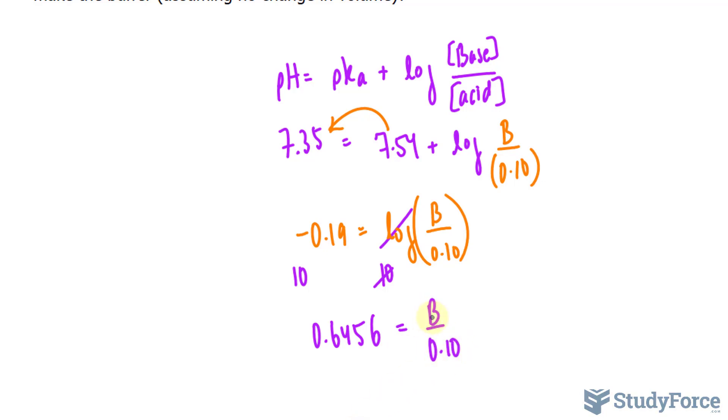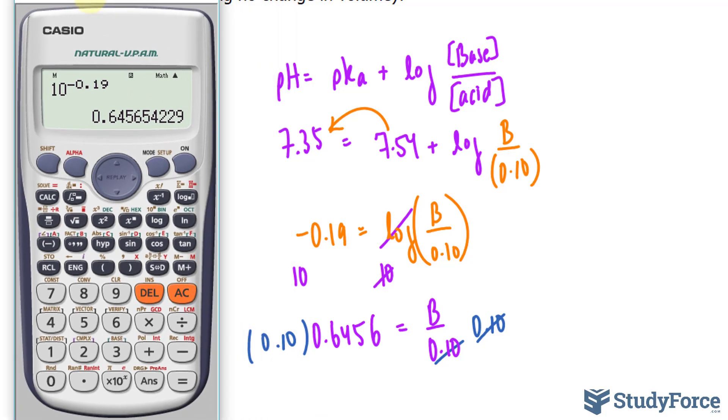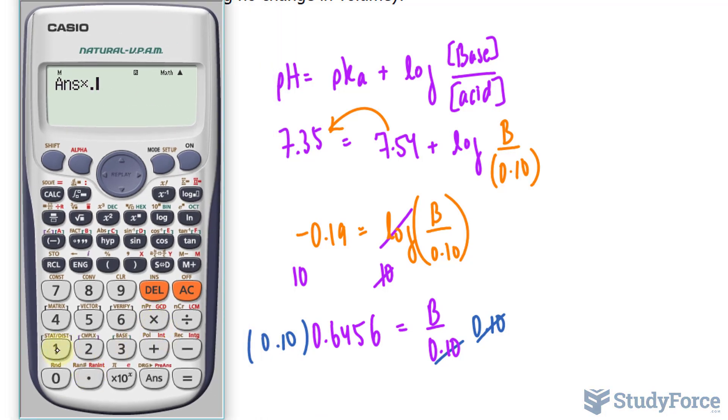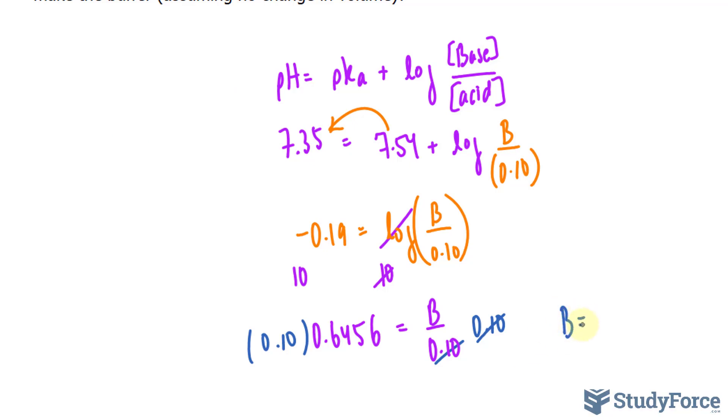Now I need B on its own, so I'll multiply both sides by the factor at the bottom, and we're good to go after this. We found the concentration of our base. So I'll take this number and multiply it by 0.10, or 0.1, same thing, and I end up with 0.06. So the base concentration is 0.06, and round it to two significant figures. Let's write down five. That is the molarity of the base.